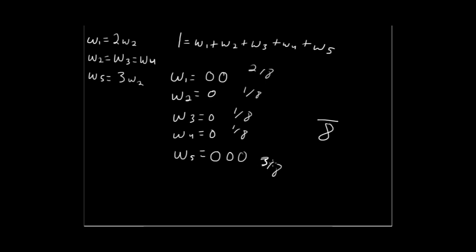W5 is worth 3/8. That's a very simple, easy way to solve for probability, and it gives us our answer: we were looking for W4 specifically, which has a probability of 1/8. I hope that helped — thank you.